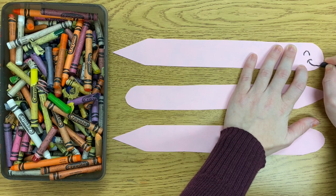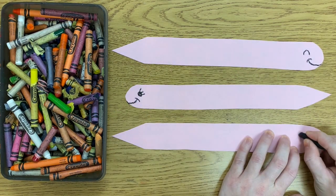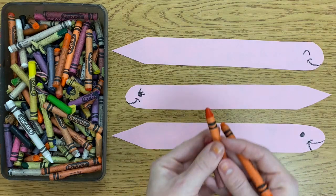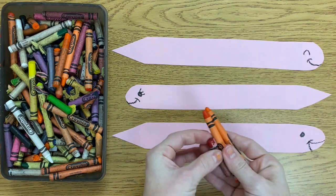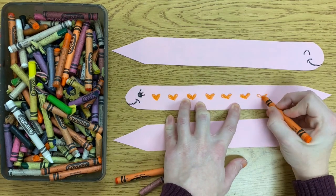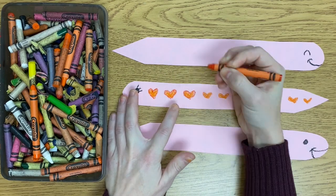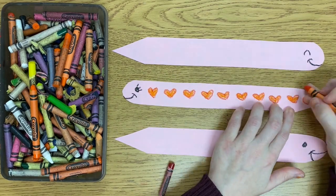Now I'm going to grab a crayon and I'm going to draw some faces on my snakes. Once I've got faces on them, I'm going to grab some more colors and start designing patterns. Remember, a pattern is a repeated line, shape, or color, or a combination of these elements.